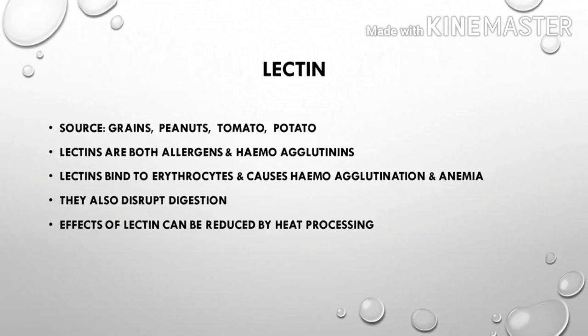Next is lectin. Lectins are found in grains, peanuts, tomatoes, and potatoes. Lectins are both allergens and hemagglutinins. Lectin binds to erythrocytes (red blood cells) and causes hemagglutination and anemia.